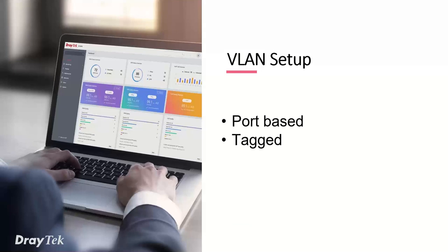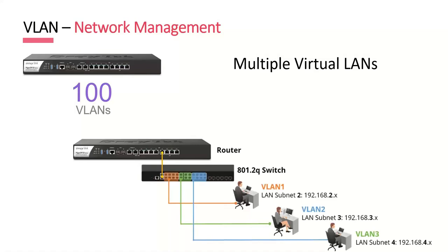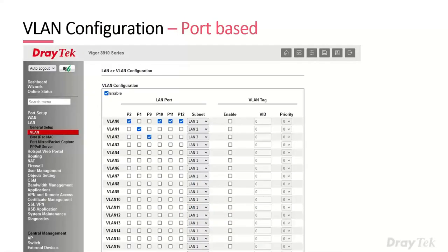Now let's look at VLAN setup on the LAN side. There are two main ways: port-based or tag-based. There are 100 VLANs supported, allowing multiple virtual LANs on the router. For port-based setup, go to LAN > VLAN and check which ports each subnet has. In an example, ports 2, 10, 11, 12 into LAN 1; port 4 into LAN 2; port 9 into LAN 3 — so plugging into port 4 puts you on the LAN 2 subnet.